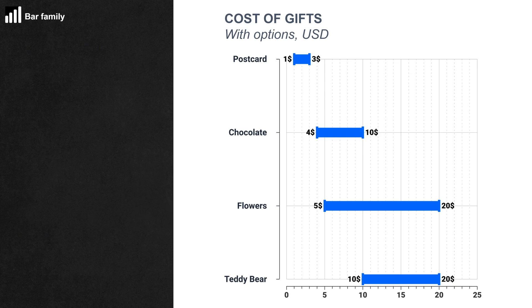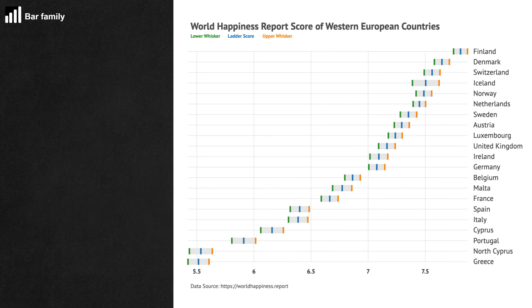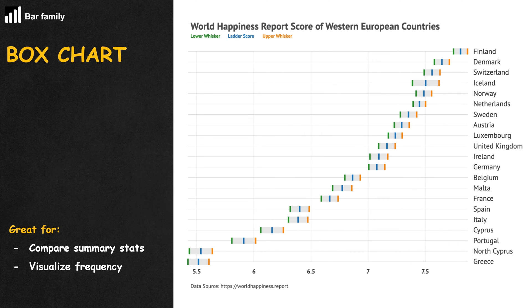When a dumbbell chart wants to be more inclusive of various body types, it can show itself as a range plot. When a range has a middle value, the range plot becomes the box chart.